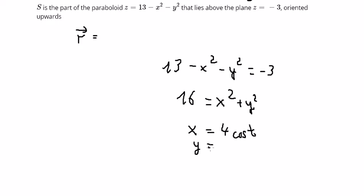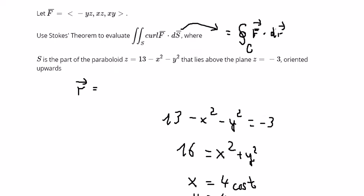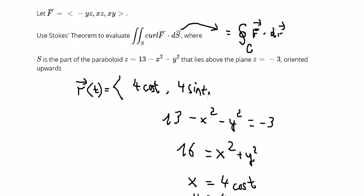We get a circle. In this situation we can parametrize: x = 4 cos(t), y = 4 sin(t). So vector r(t) = (4 cos(t), 4 sin(t), z).